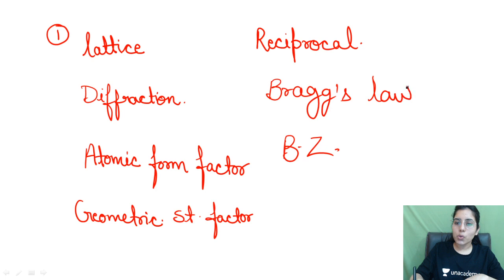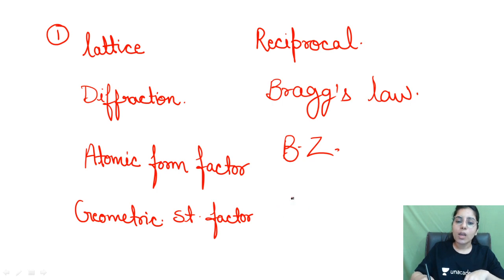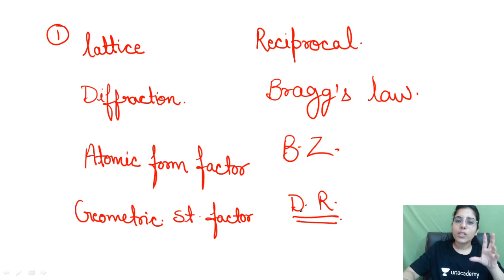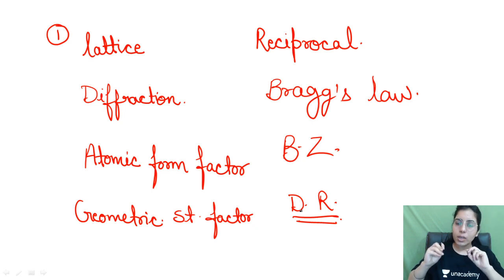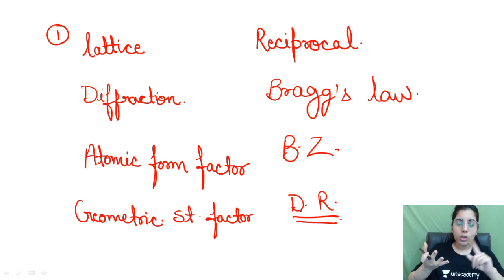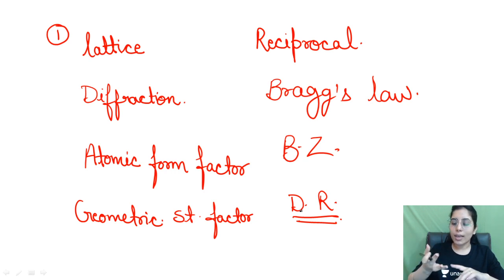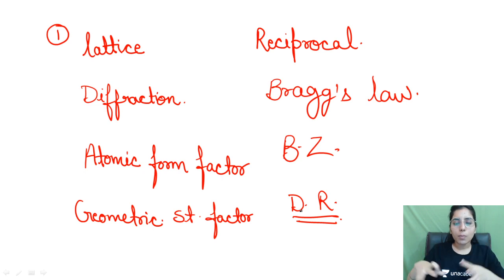Bragg's law, Brillouin zones, and the boundaries of Brillouin zones — related to dispersion relations you can expect questions. This covers most of the main points in crystal structures. There are also a few subtopics: interplanar spacing, selection rules, Miller indices, and different structures like NaCl, KCl, diamond cubic, HCP (hexagonal close-packed). Just cover up the full portion, know these structures well, and set that section aside.